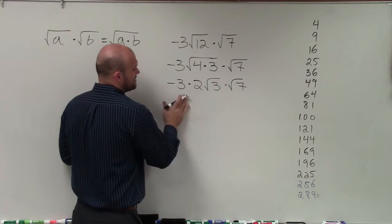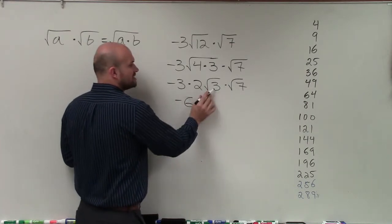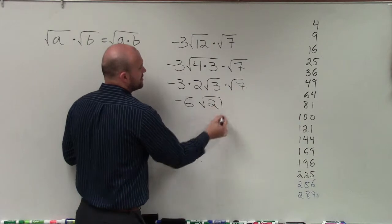Now, I can multiply negative 3 times 2, which is negative 6, and the square root of 3 times the square root of 7 is going to be the square root of 21.